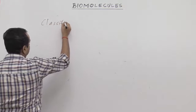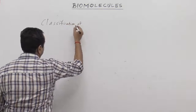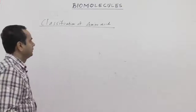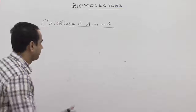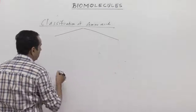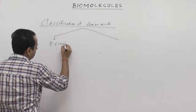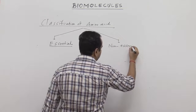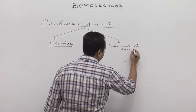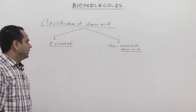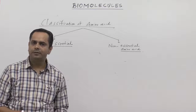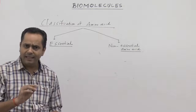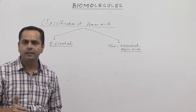If you talk about classification of amino acids, first of all, we can classify amino acids into essential and non-essential amino acids. Those amino acids which cannot be synthesized by our body tissues by any method are called essential amino acids.